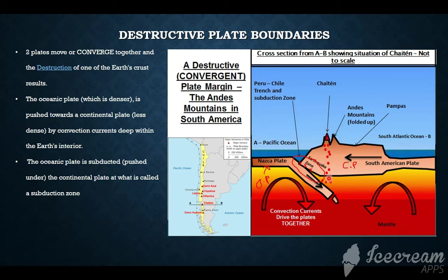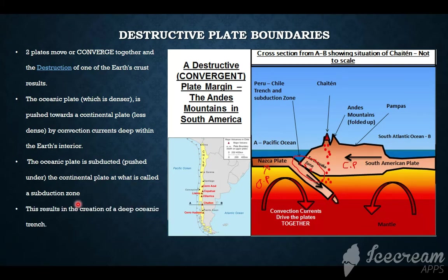Volcanic mountains are also found at the destructive plate boundary. When continental and oceanic plates meet, the crust tends to buckle, forming fold mountains as well as volcanoes. The oceanic plate is subducted under the continental plate at the subduction zone, resulting in the creation of a deep oceanic trench — a V-shaped trench — as a result of the oceanic plate sinking underneath the continental plate.